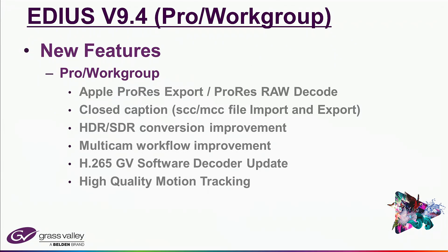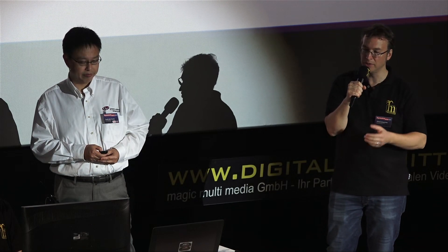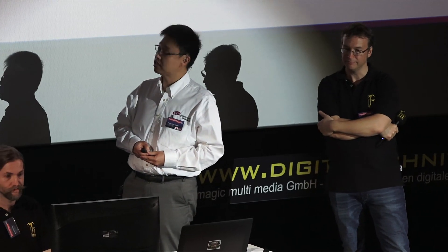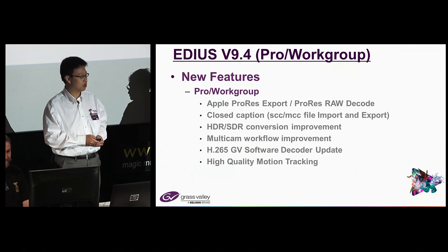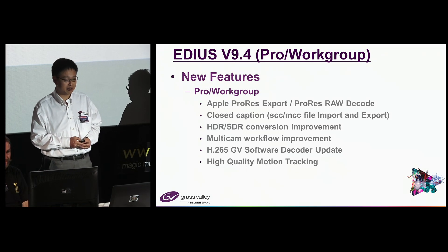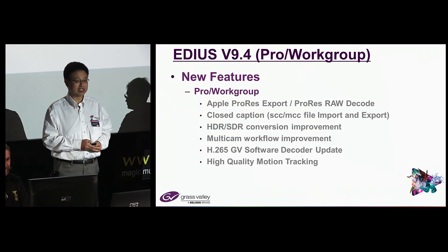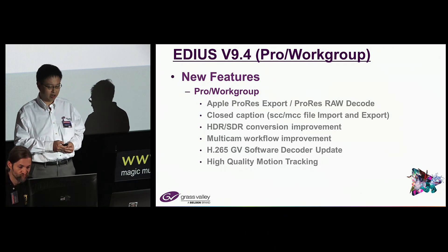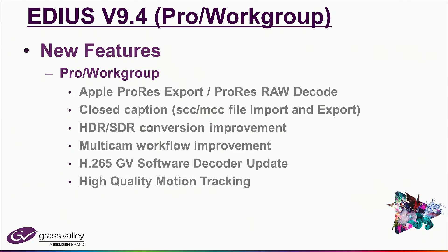Here's a list of the functions added in EDIUS 9.4, which can also be found on EDIUS.de where each item is explained in more detail. The biggest part we'd like to mention is Apple ProRes export — it's been an ongoing issue for us for a long time, and Apple has finally allowed us to support it. They also gave us the codec for ProRes RAW, making us one of the first implementers on the Windows platform to support ProRes RAW.